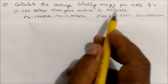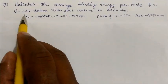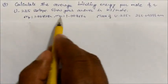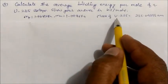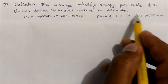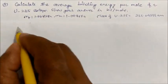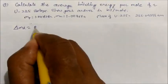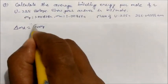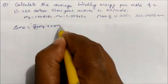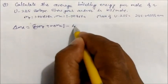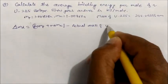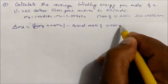Calculate the average binding energy per mole of uranium-235, with the answer required in kilojoules per mole. Mass of proton, neutron, and the actual mass of uranium-235 are given in u. Again, mass defect = (number of protons × proton mass) + (number of neutrons × neutron mass) − actual mass of uranium-235 nucleus.